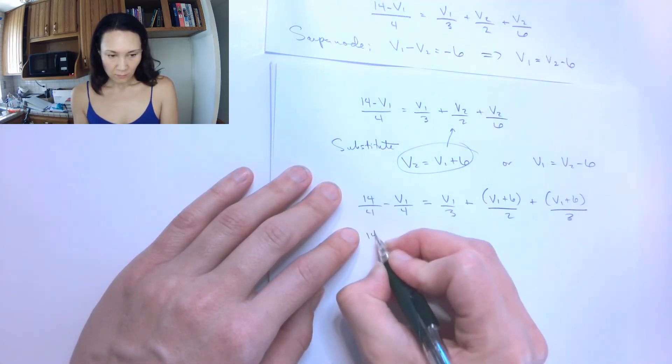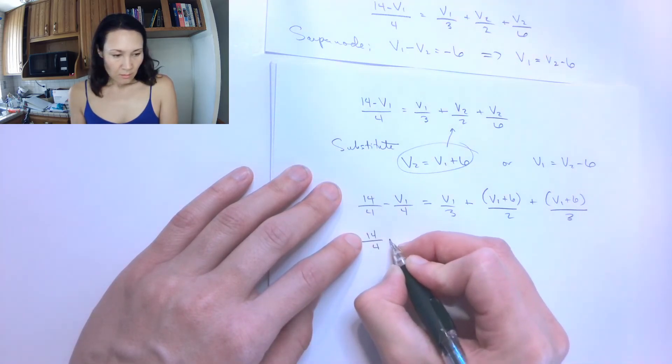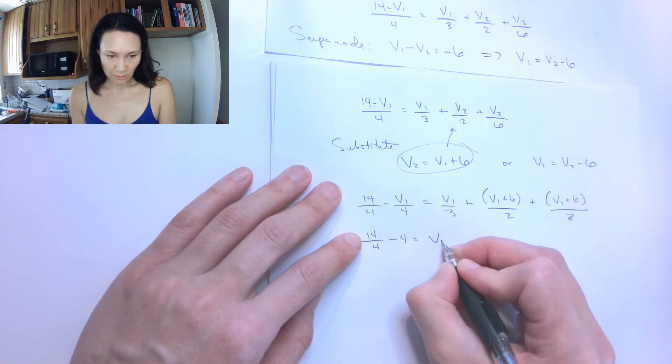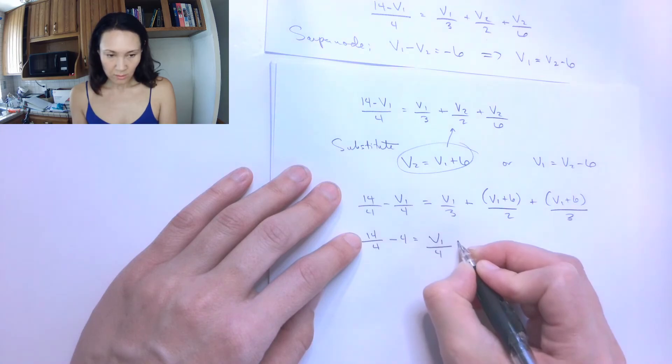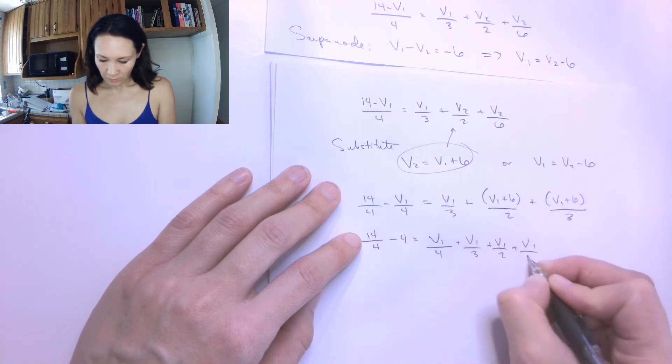So what do I get? I get 14 over 4 minus 6 is equal to, if I bring the V1 terms over here, V1 over 4 plus V1 over 3 plus V1 over 2 plus V1 over 6.